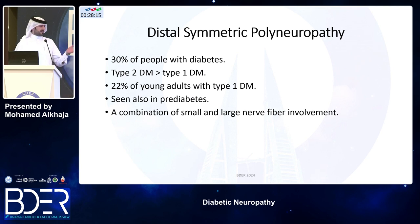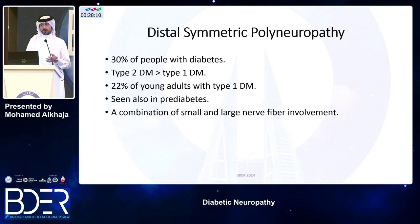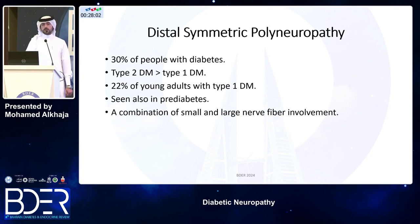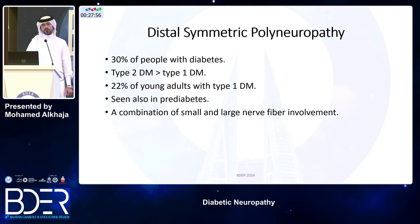The classic form, distal symmetric neuropathy, is seen in 30% of patients with diabetes — more in type 2 than type 1 — and also in young patients with type 1. Interestingly, it can be seen in pre-diabetes, not only in diabetes, and involves a combination of small fiber and large fiber symptoms.